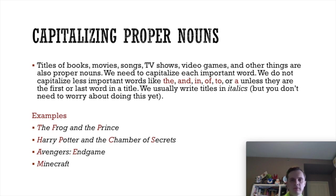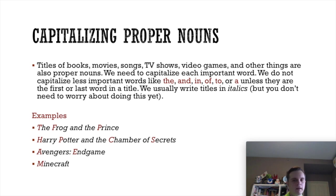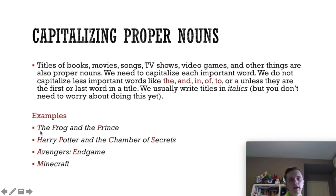When you write the name of a book, song, or TV show, you would normally write it in italics — words that are slanted slightly. You would do that when typing on a computer, but when writing by hand I can't expect you to write in italics, so we're going to forget about that. All you need to do is capitalize correctly. So for the book "The Frog and the Prince" — we capitalize "The" because it's the first word in the title, but we don't capitalize the second "the" or "and." The important words "Frog" and "Prince" are capitalized.